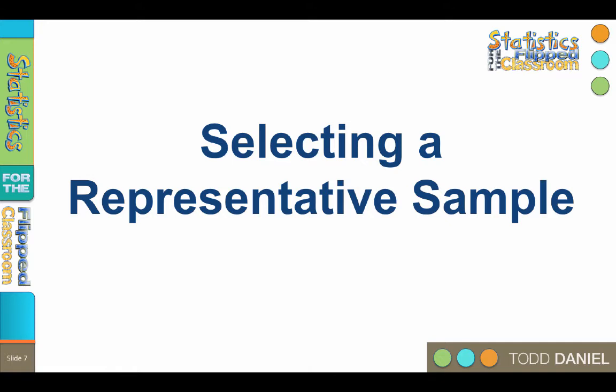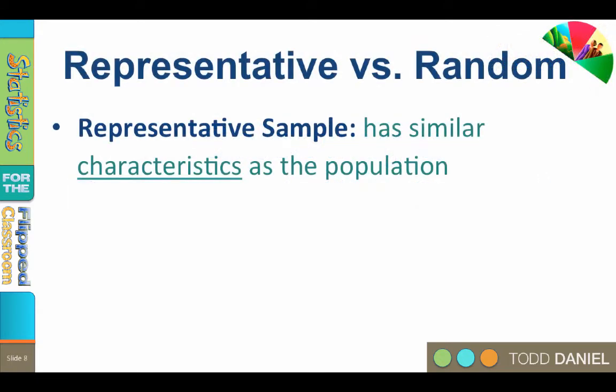We select our sample from a population. We want our sample to be representative of the population, so that after we conduct our well-designed research, what we learn from the sample can tell us something valuable by generalizing back to the population. A representative sample has similar physical or psychological characteristics as the population.